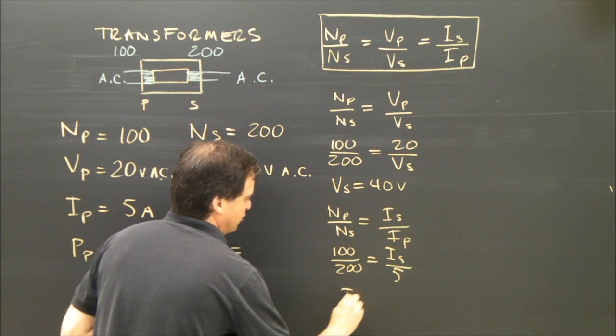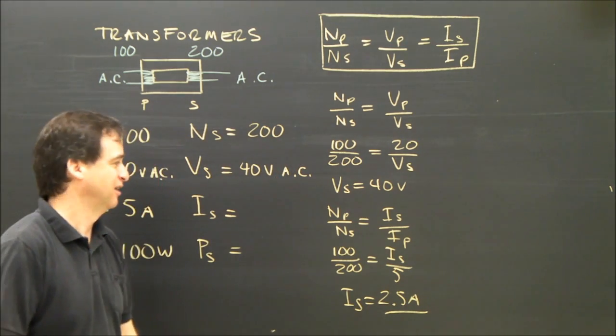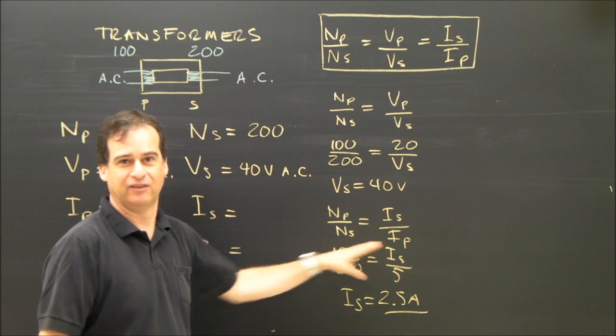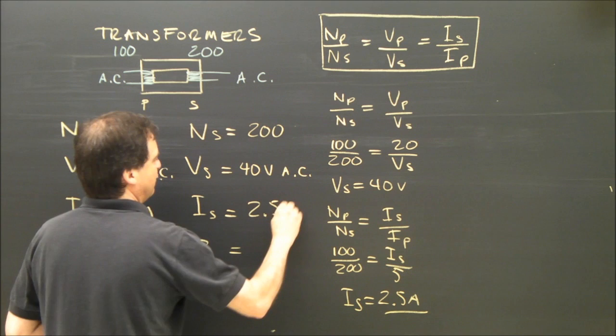So we've got 100 over 200 equals current in the secondary over 5. Rearrange that. Current in the secondary should be 2.5 amperes. So you can work that out. It should work out. Yeah, it should. Half of that, half of that, they're equal. Okay? Now, current of the secondary is 2.5 amperes.